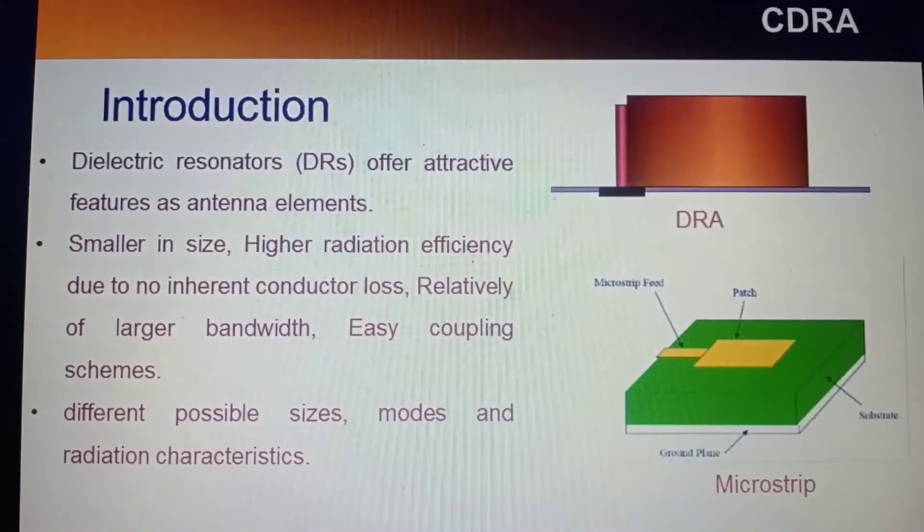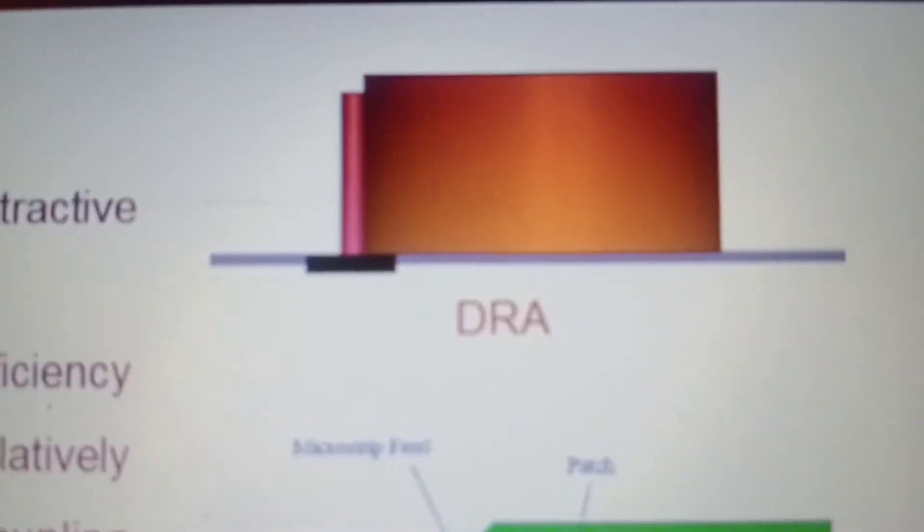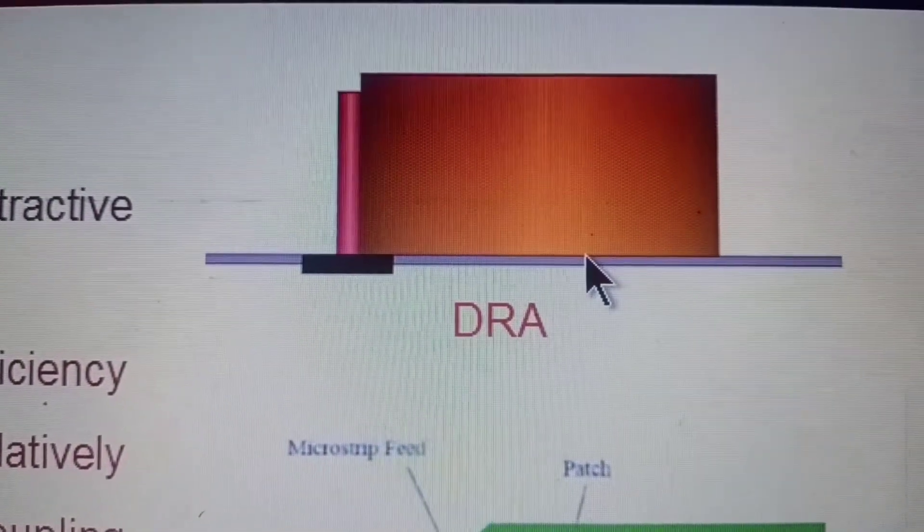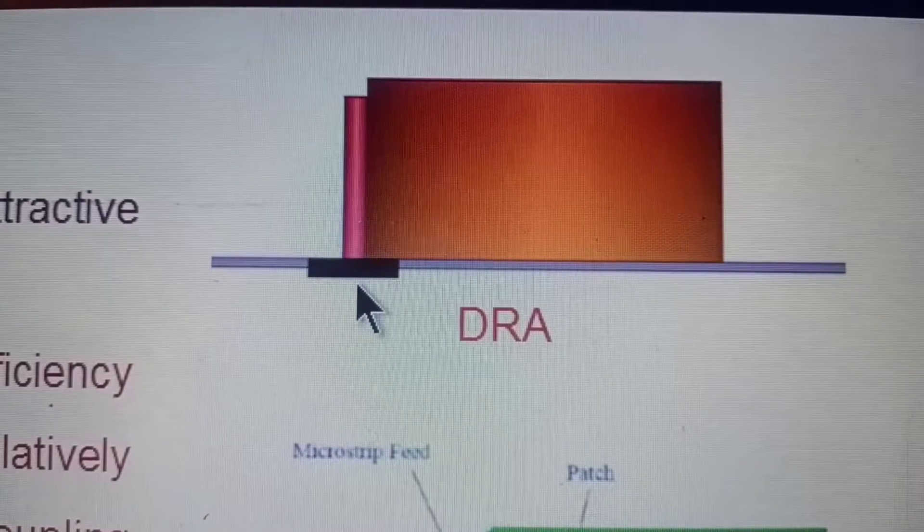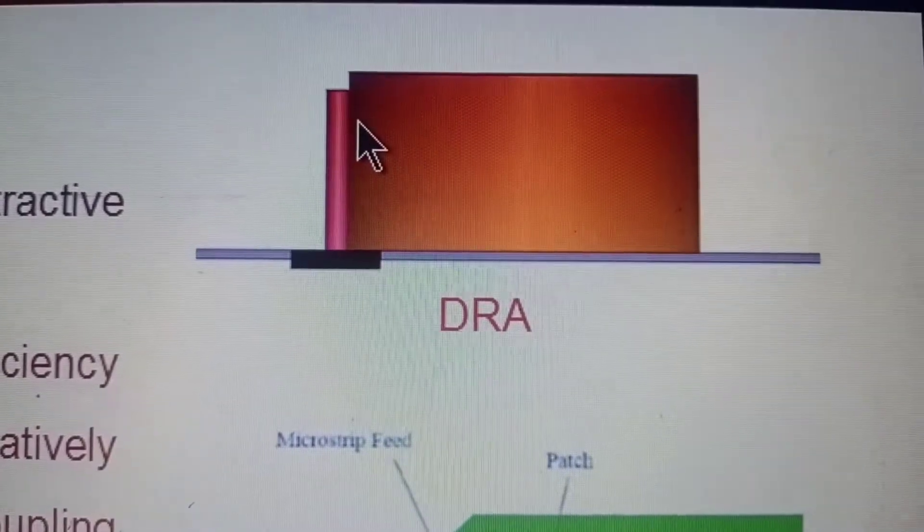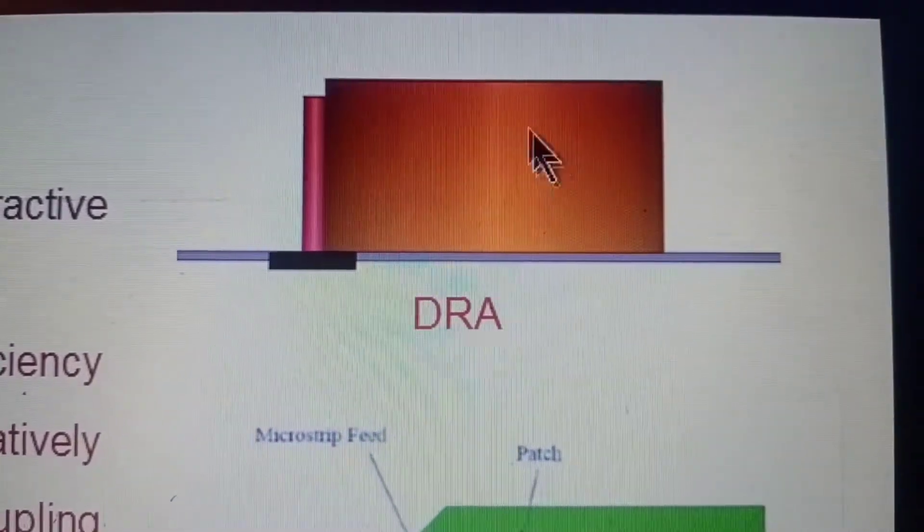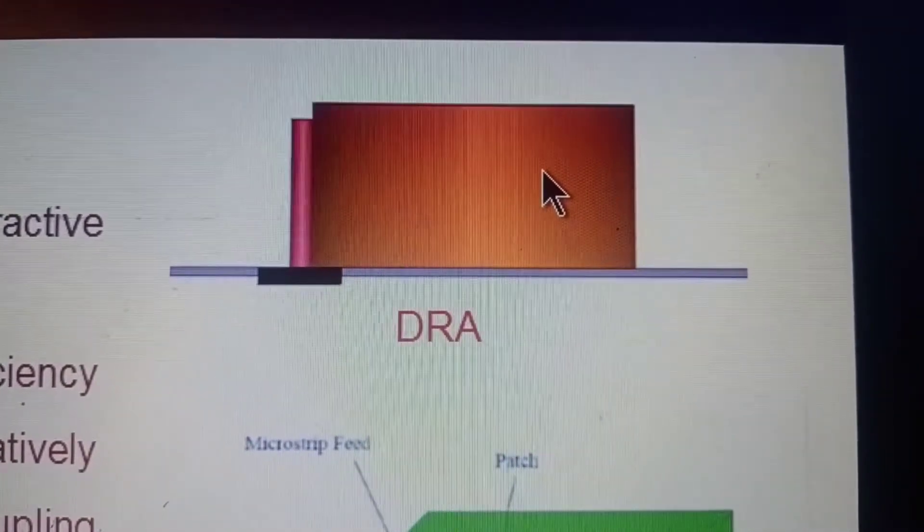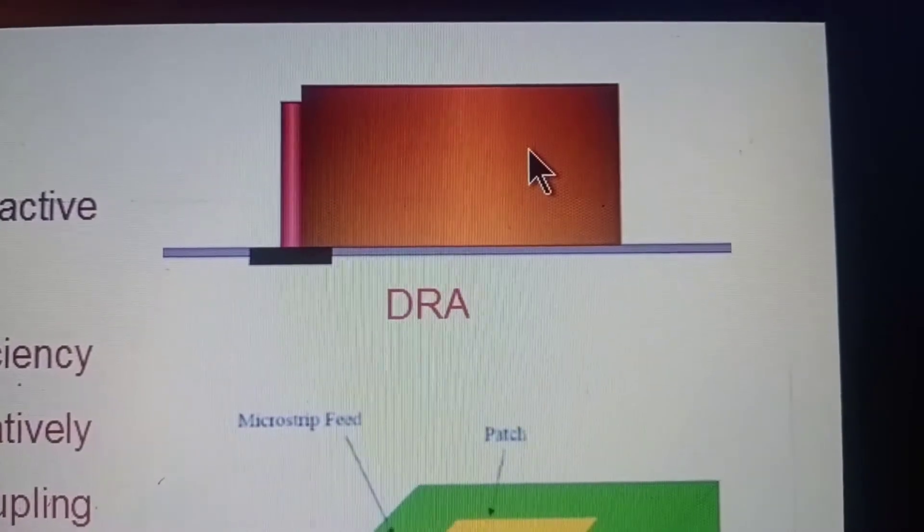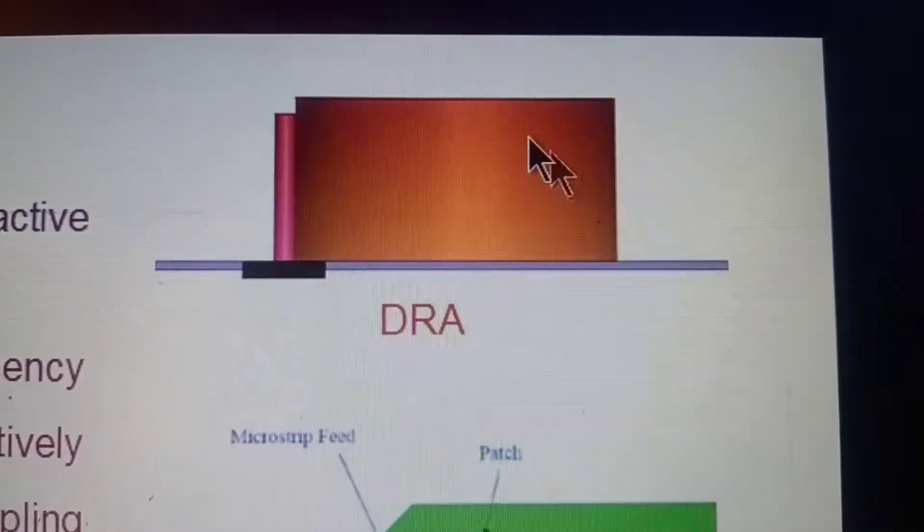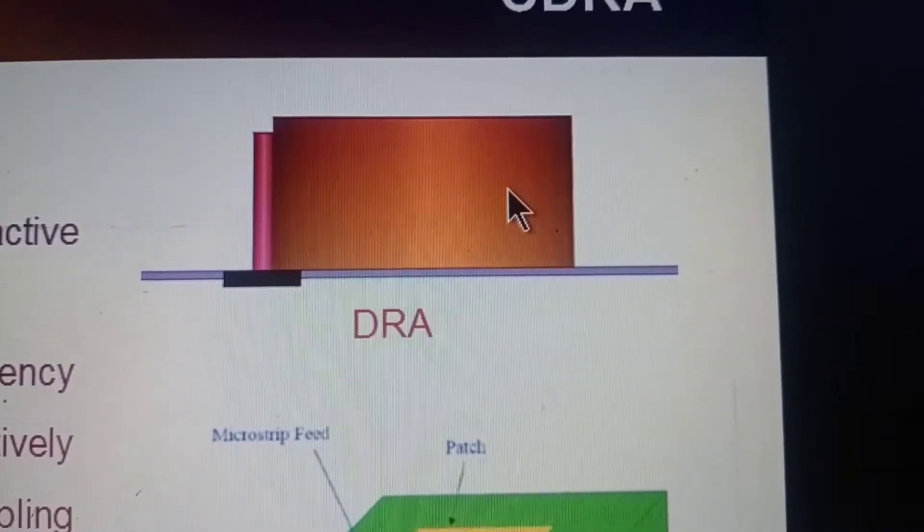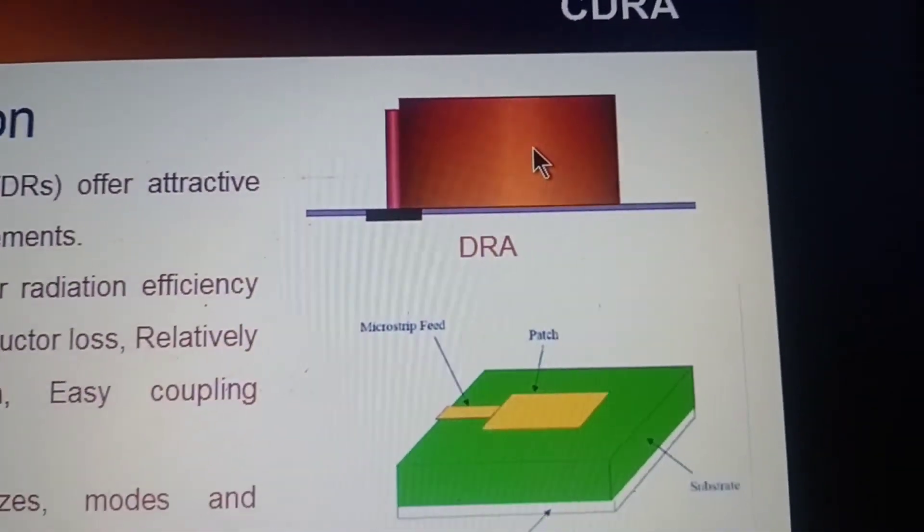As we all know, the dielectric resonator antenna looks like this. There is a ground plane, only the metal, and the coaxial probe is fed. This is the dielectric material with suitable dielectric constant above 10, epsilon r equal to more than 10. I have considered here epsilon r of 10, also height is 10 mm and radius is 10 mm.